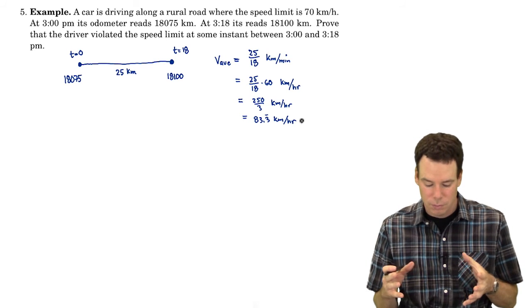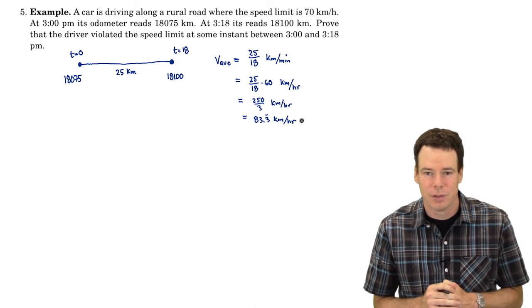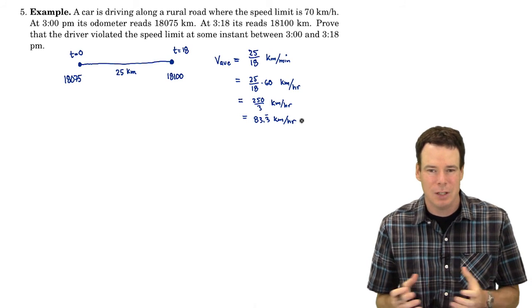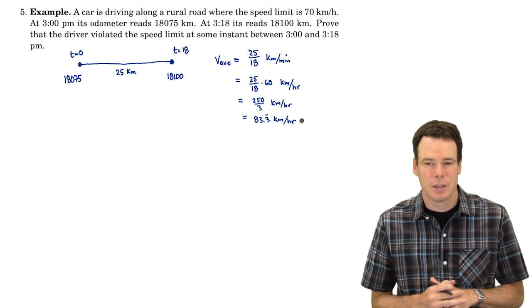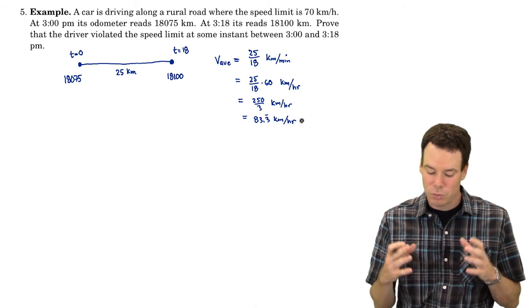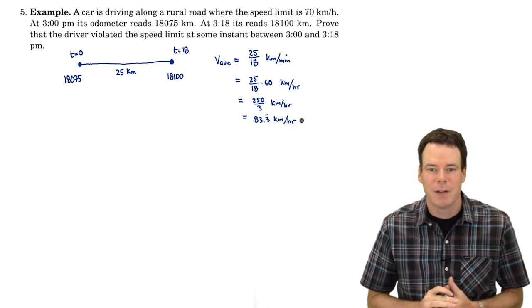We look at this and say, oh, my average velocity was larger than the speed limit. Does that mean anything? Does that mean my instantaneous velocity had to be larger than the speed limit at some point along my travels? Right now all we have is information about the average velocity. But this is where the mean value theorem comes in.